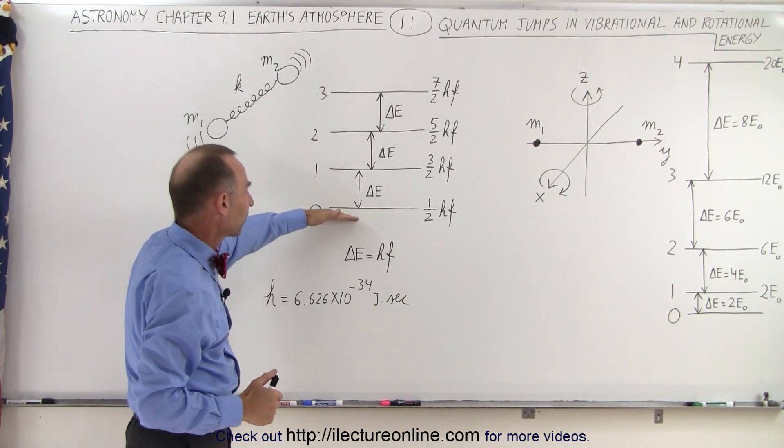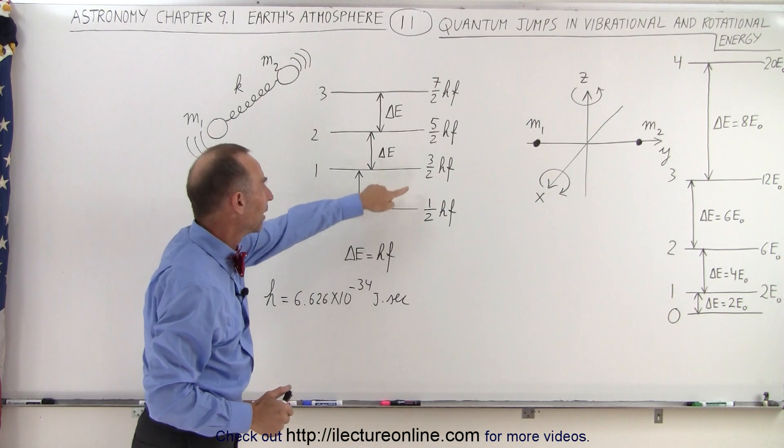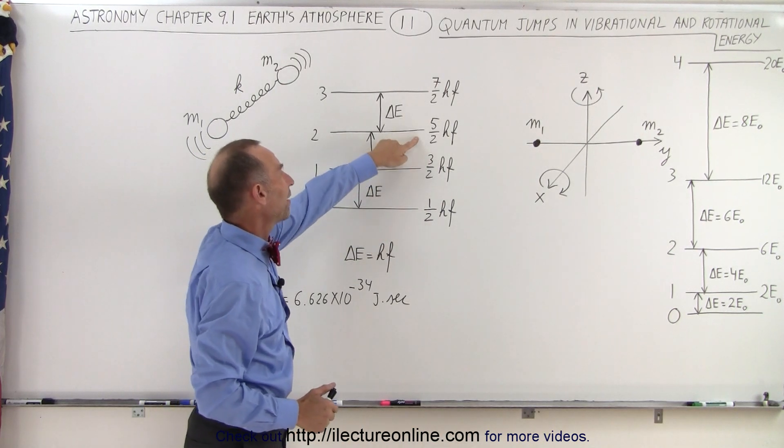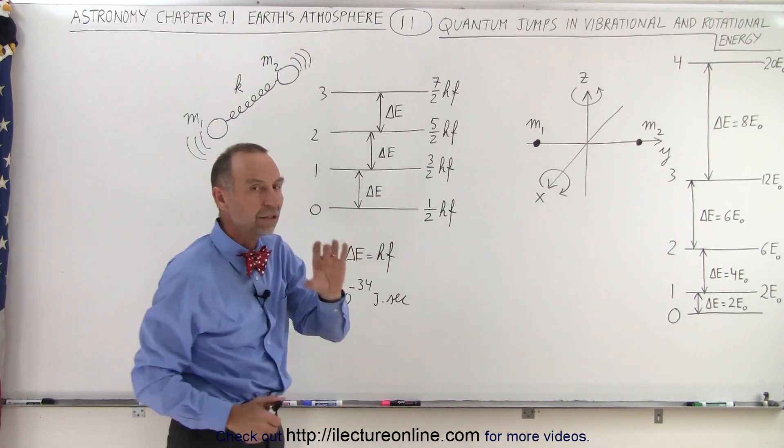You can see here that the ground state is one-half times the product of Planck's constant times the frequency, then it's three-halves to the next level, five-halves, seven-halves, and so forth. So the difference between energy levels is quantized.